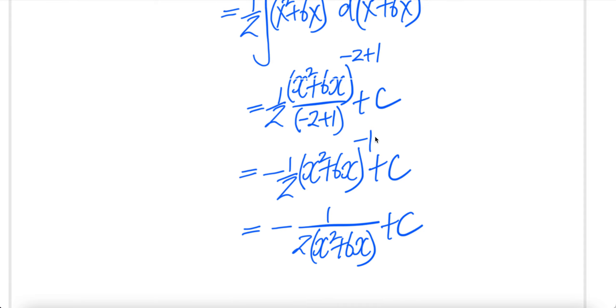Minus 2 plus 1 is minus 1 upstairs, minus 1 downstairs. Minus 1 times half, you get minus half. And then this is x squared plus 6x to the power of minus 1. Write that as 1 over x squared plus 6x.